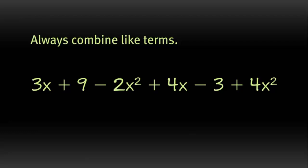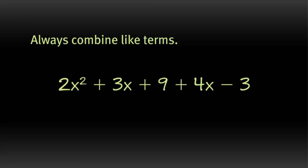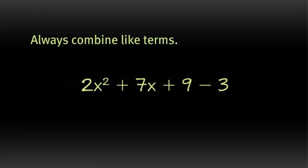We want to combine like terms. So we can put together the x squareds. We'll add 4x squared and negative 2x squared and get simply 2x squared. The next term that we can combine is the x's. So 4x and 3x is 7x. And finally, we'll look at our constants, so just the numbers. That gives us 9 and negative 3, or positive 6.